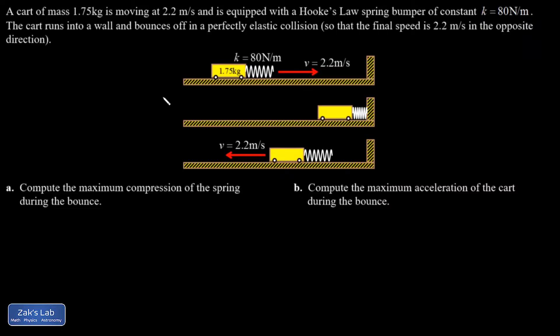In this problem, we have a perfectly elastic bounce, meaning that it's energy conserving. So this car with a springy bumper comes in at 2.2 meters per second, it bounces off a wall and comes out at 2.2 meters per second.